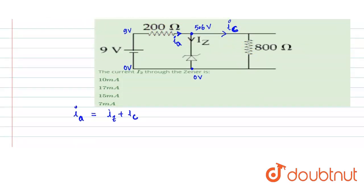For finding the value of IZ, we can simply find the value of IA and IC. Let's try to find the value of IA first. Current is V upon R. What is the potential difference across the 200 ohm resistance?